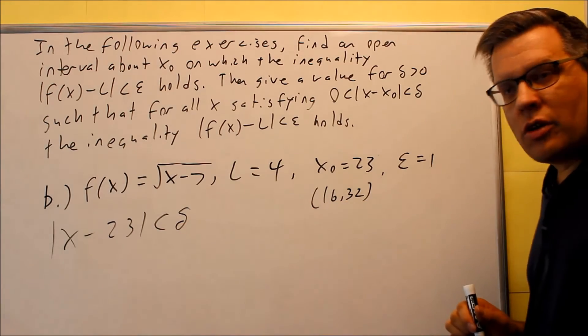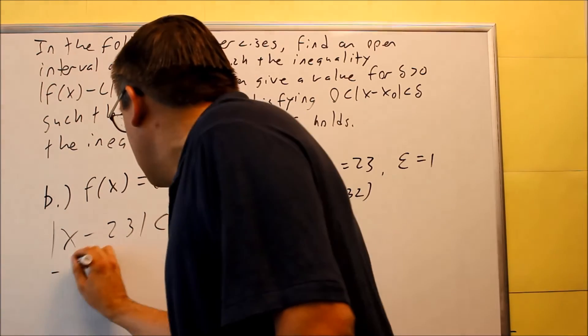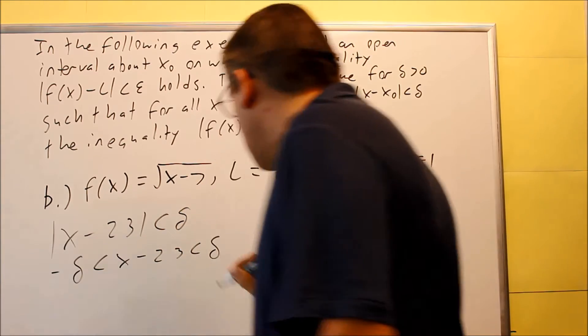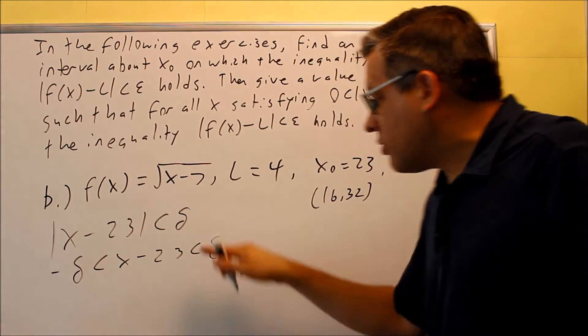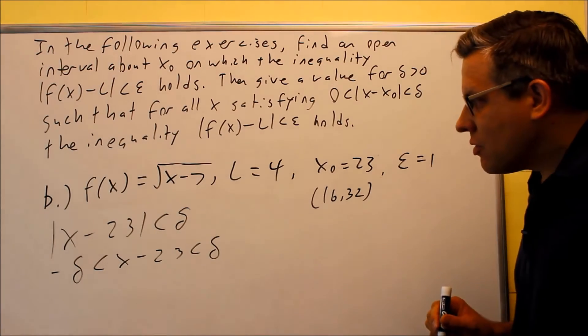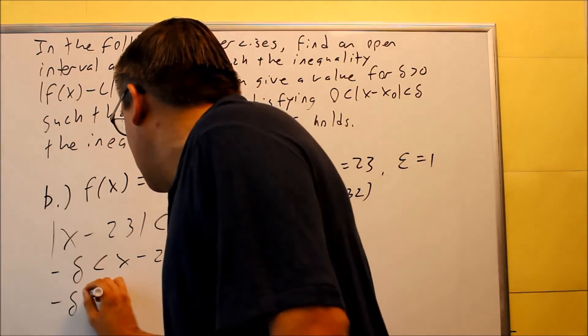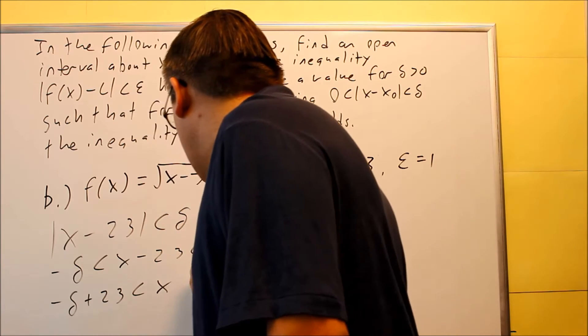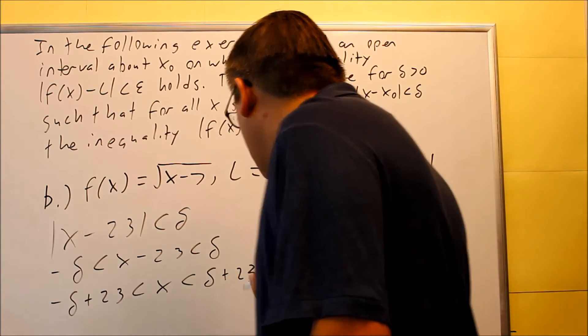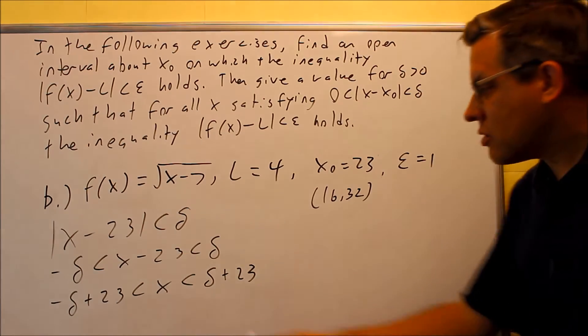We're going to solve this, so we're going to turn it into an inequality, and it's going to look like this. So again, it's between negative delta and positive delta. You need to add 23 to all the sides. So negative delta plus 23, less than x, and delta plus 23 over here. We're doing that, again, because you want to isolate and solve for x.